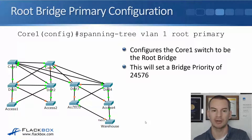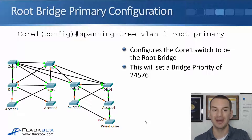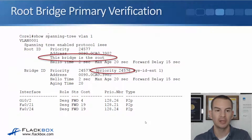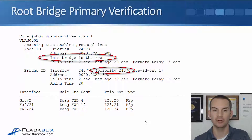You can have different switches being the root bridge for different VLANs — here we're using VLAN 1 for our example. When you put that command in, it sets a bridge priority of 24576, which is better than the default bridge priority, so it is manipulating the election so that this switch will be elected as the root bridge. To verify it, I go on to Core 1, do a show spanning tree for VLAN 1, and I can see the message 'this bridge is the root' and the priority is 24576.